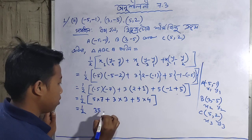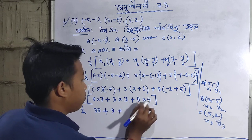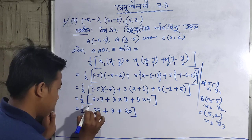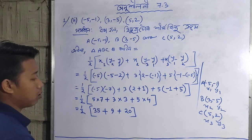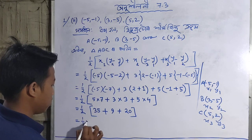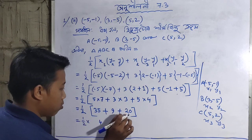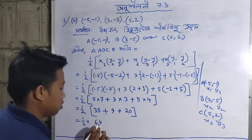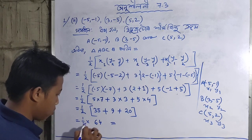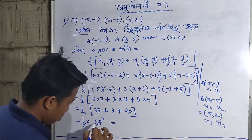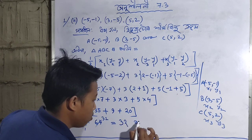Adding those together: 35 plus 9 is 44, and 44 plus 20 equals 64. Now divide 64 by 2, which gives us 32. So the area is 32 square units.